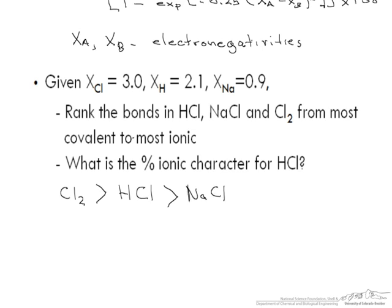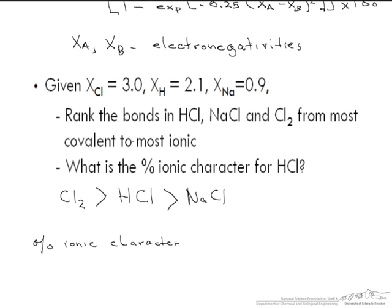And how we got this is in the differences in the electronegativities. So now let's look at the percent ionic character. And we can tell in Cl2, because there is no difference in the electronegativities, the percent ionic character is 0.